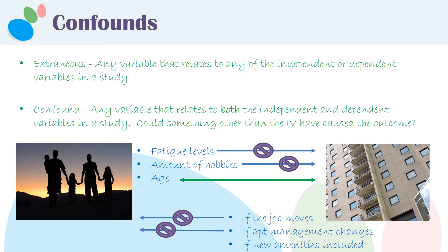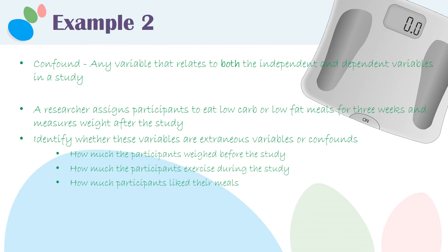We're going to go through several more examples. Pause this video, and when you're ready to talk about these things being extraneous variables or confounds, unpause the video. Keep in mind that the first thing you need to do is identify what the independent and the dependent variables are in this study, because you need to establish whether each variable is related to both or just one of them.